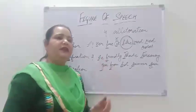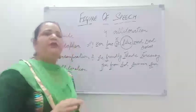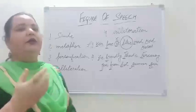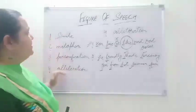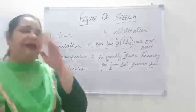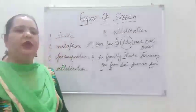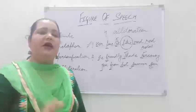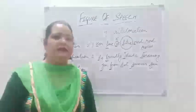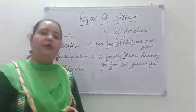So it is very easy to understand. I just hope that today's lecture was very fruitful to you. We have discussed four terms here: simile, metaphor, personification, and alliteration. There are a lot of figures of speech, but we will discuss these four. Revising: simile and metaphor are almost similar — like twin sisters or twin brothers. Simile is a comparison; it is direct, with the word 'as' or 'like' written.